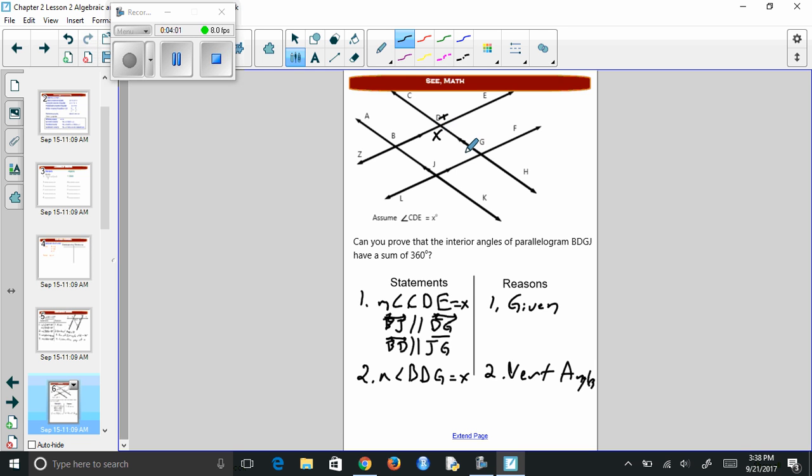Now we want to see that all four of these add up to 360. So if this is x, this has to be 180 minus x. But measure of DGJ equals 180 minus x. And that's because of consecutive interiors.